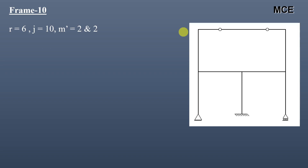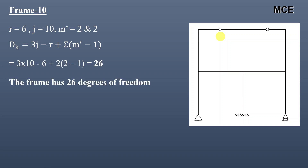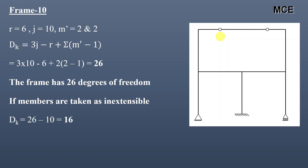For frame 10, this frame has 6 reactions, 10 joints, and 2 internal hinges. The number of members meeting at both internal hinges is 2, so m′ = 2 and 2. The value of DK = 26, meaning this frame has 26 degrees of freedom. If members are taken as inextensible, this frame has 10 inextensible members — note that the horizontal member at the top will be counted as 3 members as it contains 2 internal hinges — so DK = 26 − 10 = 16.